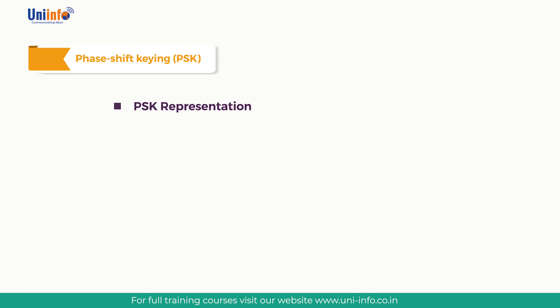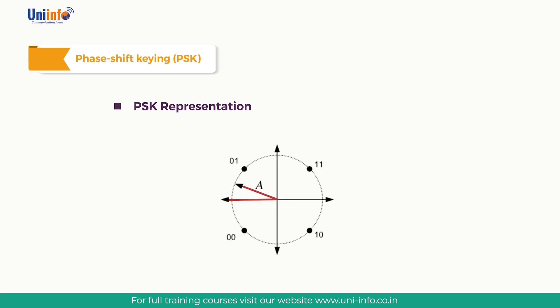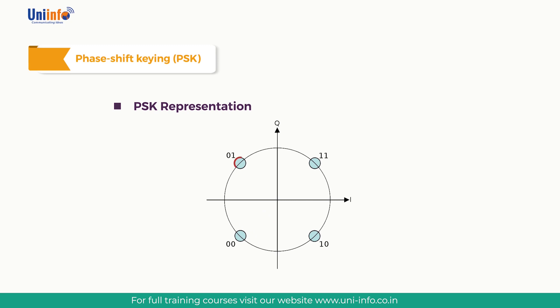PSK signals can be represented using a phasor constellation diagram, where the phase of the signal is represented by the angle around a circle and the amplitude by the distance from the origin. The signal can be resolved into quadrature components: the sine represents the in-phase component and the cosine represents the quadrature component.